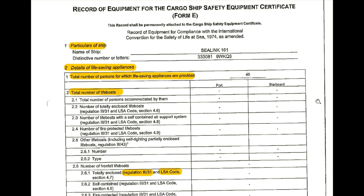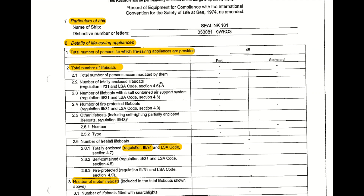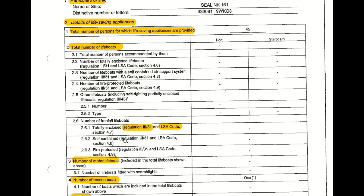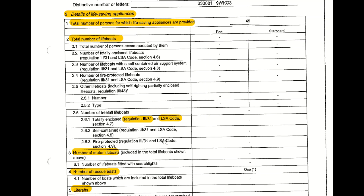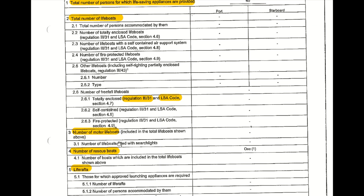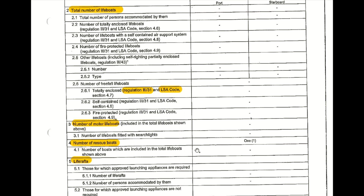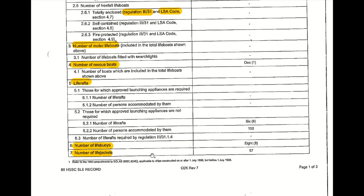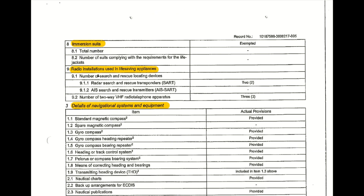Under details of life-saving appliances, it covers the total number of persons for which the LSA are provided — here it is 45 — the total number of lifeboats, number of freefall lifeboats, and all those details. The moment you pick out a point, you keep elaborating on it: number of motor lifeboats, number of rescue boats, life rafts, and immersion suits.